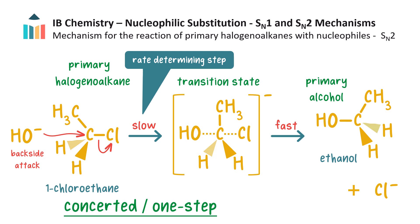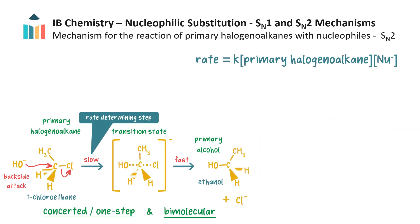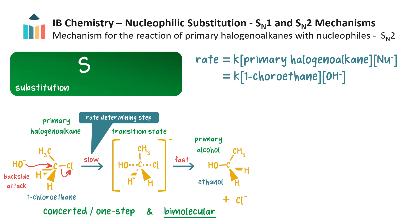The slowest step in a reaction is the rate determining step, and since the slowest step here depends on the concentrations of both the reactant species, this mechanism is said to be bimolecular. We can now deduce the general rate law, which is second order overall. This is the specific rate law for this specific reaction. This reaction mechanism is a substitution reaction which is nucleophilic and bimolecular, and so we call it an SN2 mechanism for short.